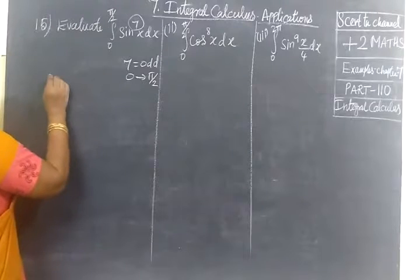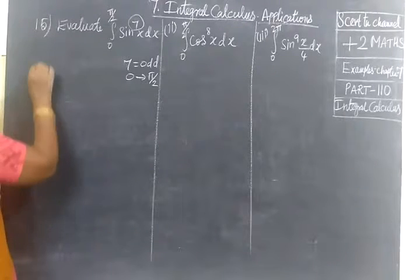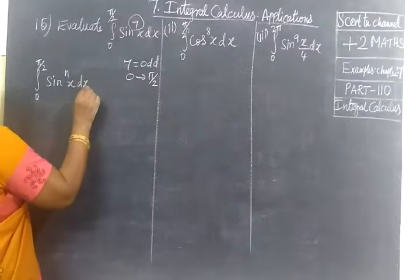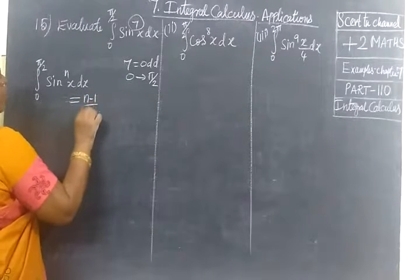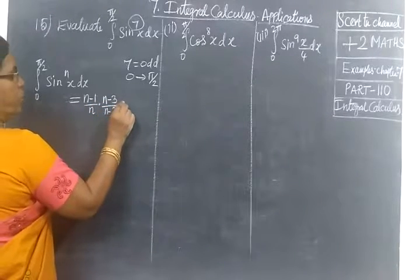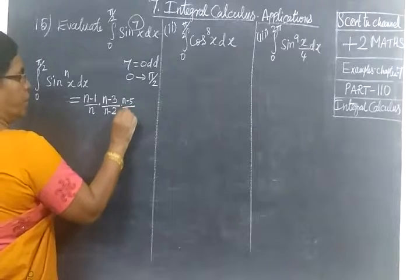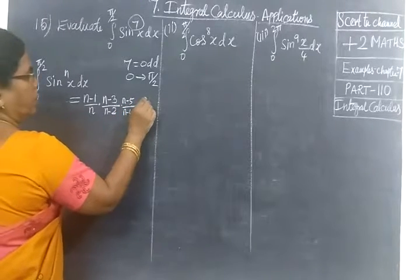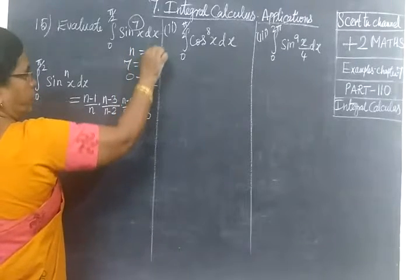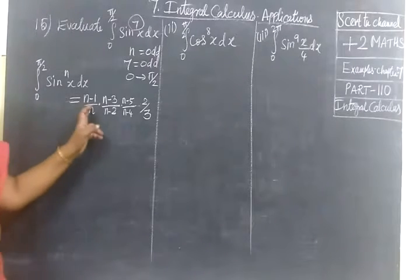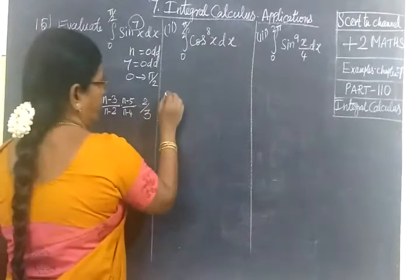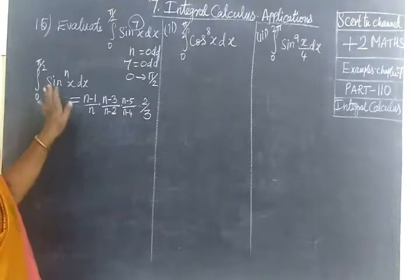n equal to odd means we are using the formula: integral 0 to π/2 of sin power n dx equals n-1/n times n-3/n-2 times n-5/n-4, etc., times 2/3 where n equals odd. If n is odd, n is odd, then 2/3. n is even - for both sin and cos, same formula applies.